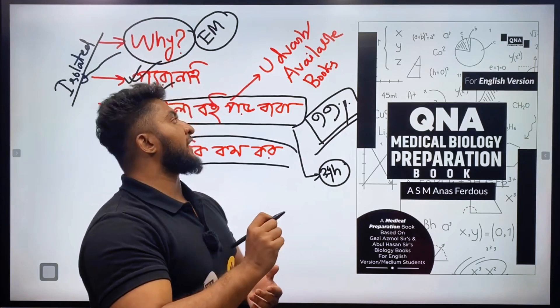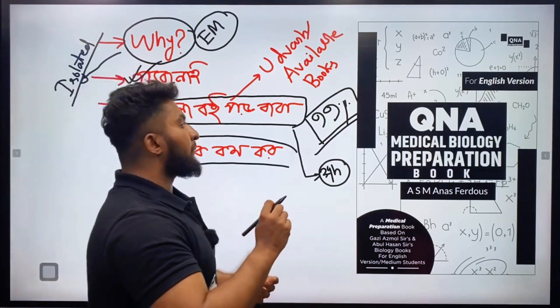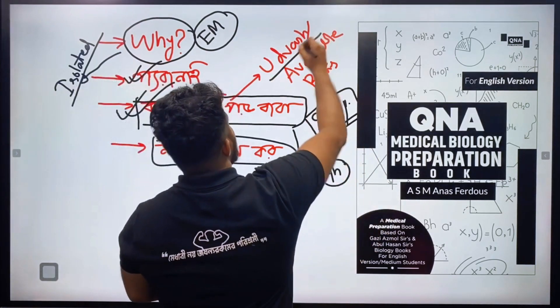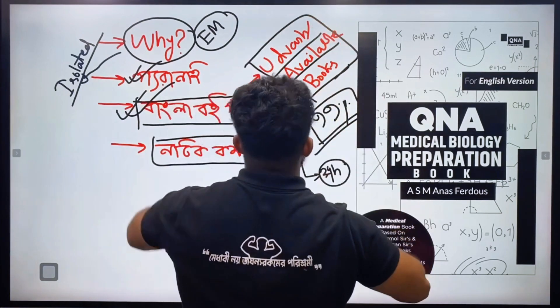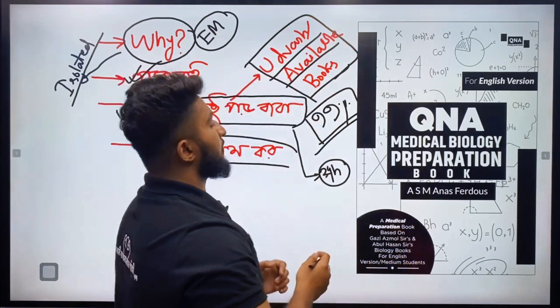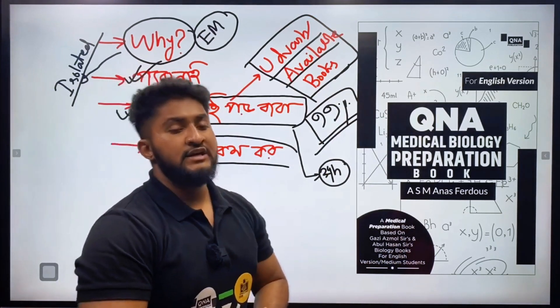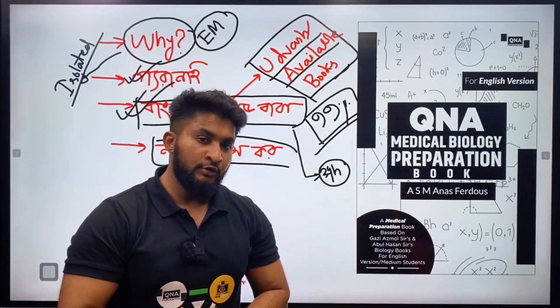In my opinion, engineering varsity students should read books in Bengali first, then model books. For those who don't know much Bengali, the English version books are better for general varsity because of personal preference.